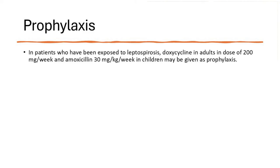For prophylaxis, adults can receive doxycycline 200 mg per week; children can receive amoxicillin 30 mg/kg per week, continued for the duration of monsoon season exposure. In summary, leptospirosis is a complex zoonotic disease with many exciting new developments in therapy and research. Vaccination is still in various research modes with nothing currently available, but progress continues. Thank you very much.